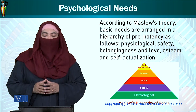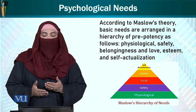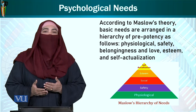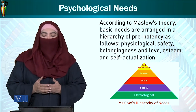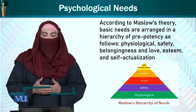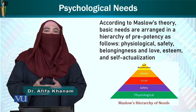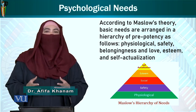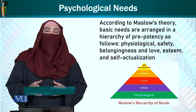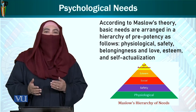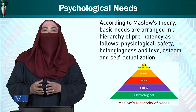According to Maslow's theory, basic needs are arranged in a hierarchy of potency as follows: physiological, safety, belongingness and love, esteem, and self-actualization. Our moral and ethical values are the first of our psychological needs to be administered, so they work under them.